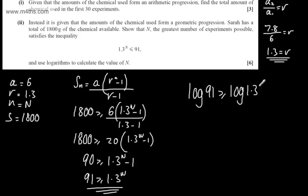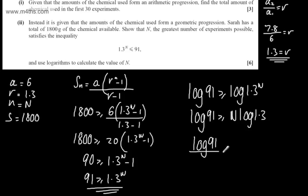Using the power law, I can write now that log 91 will be equal to or greater than N log 1.3. Log 1.3 is a positive number, therefore I don't need to worry about when I'm dividing the inequality, and I can write that log 91 over log 1.3 must be equal to or greater than N.